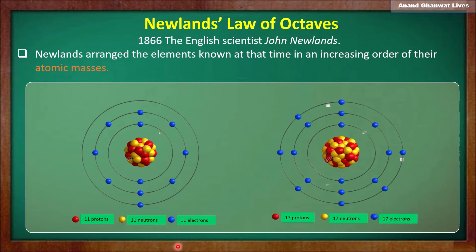Now let us learn about chlorine. Chlorine has atomic number 17, meaning the number of protons is 17, number of neutrons is 17, and number of electrons is 17. So what is the atomic mass of chlorine? Atomic mass is the number of protons plus the number of neutrons. So 17 + 17 = 34.